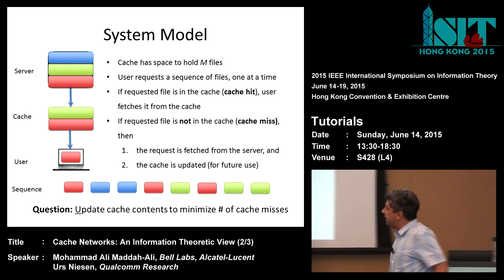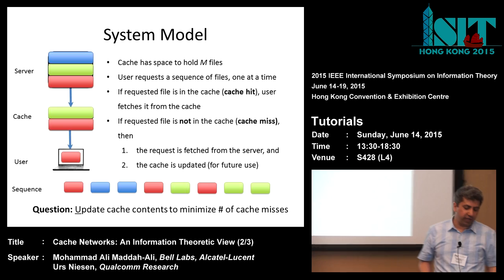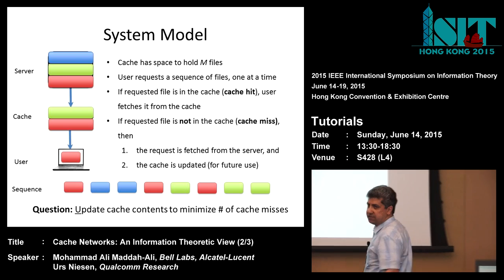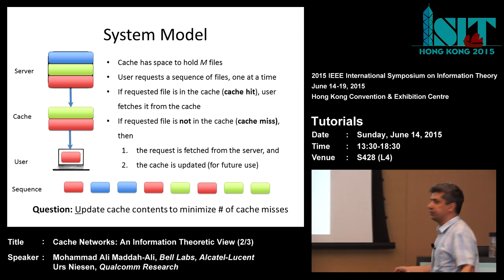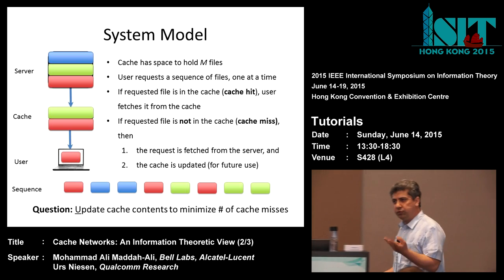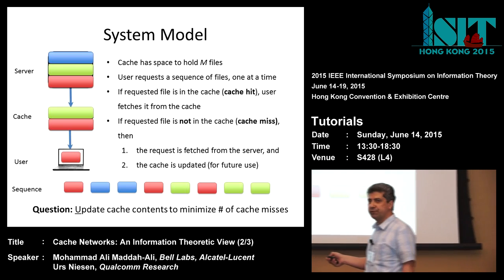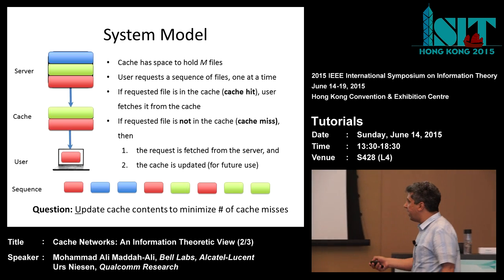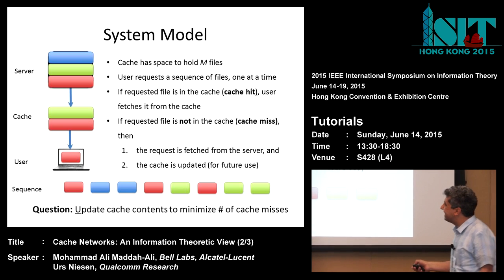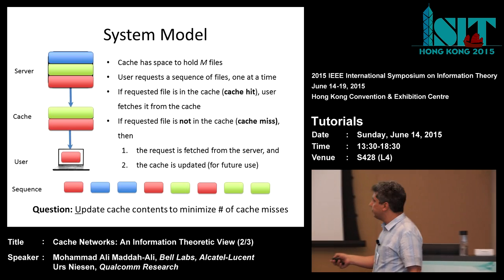So what is the system? In this problem, we have a server which has a lot of files. We have a cache which has space to cache M files. And then we have a user. The user requests a sequence of files one after each other — for example, first it asks for the red file, then blue file, then blue file, then red file, and so on. For each request, we have two scenarios: a cache hit, meaning the requested file is in the cache and we fetch it from there, or a cache miss, meaning the file is not there and we have to fetch it from the server. In that case, we may update the cache for future use.